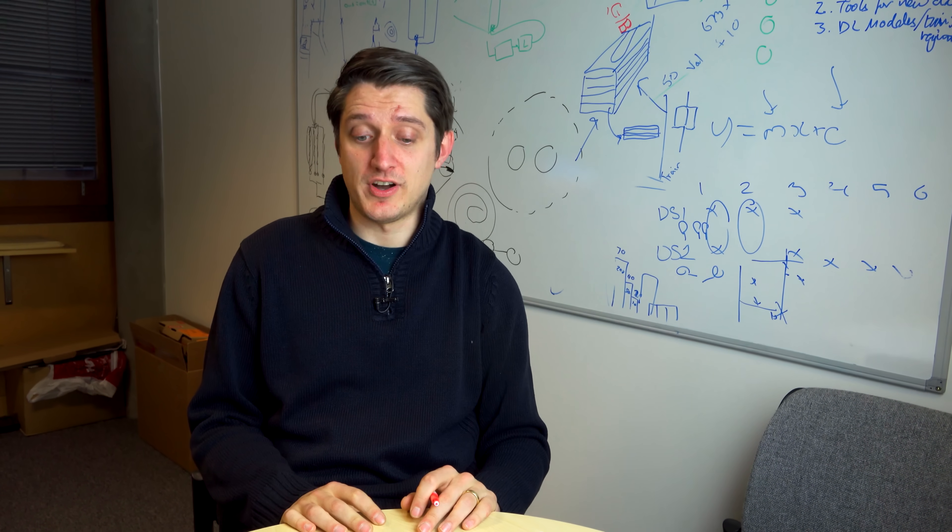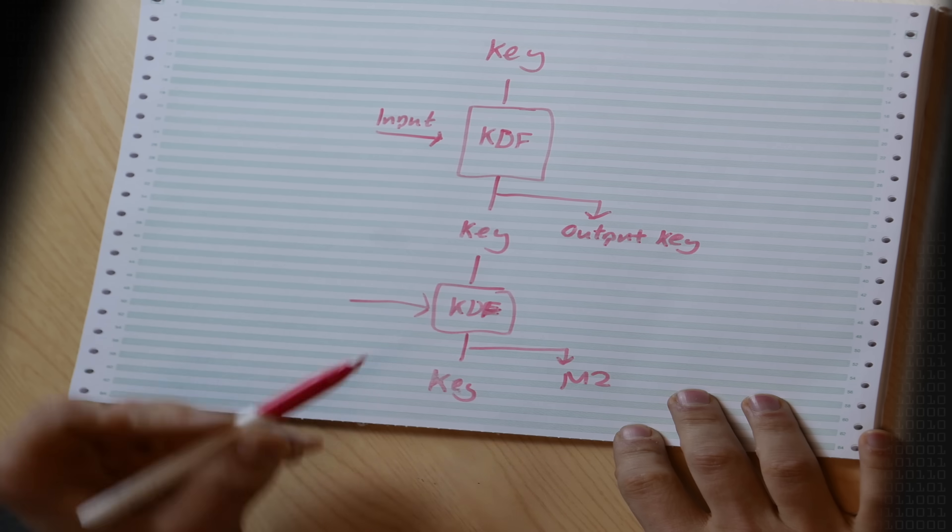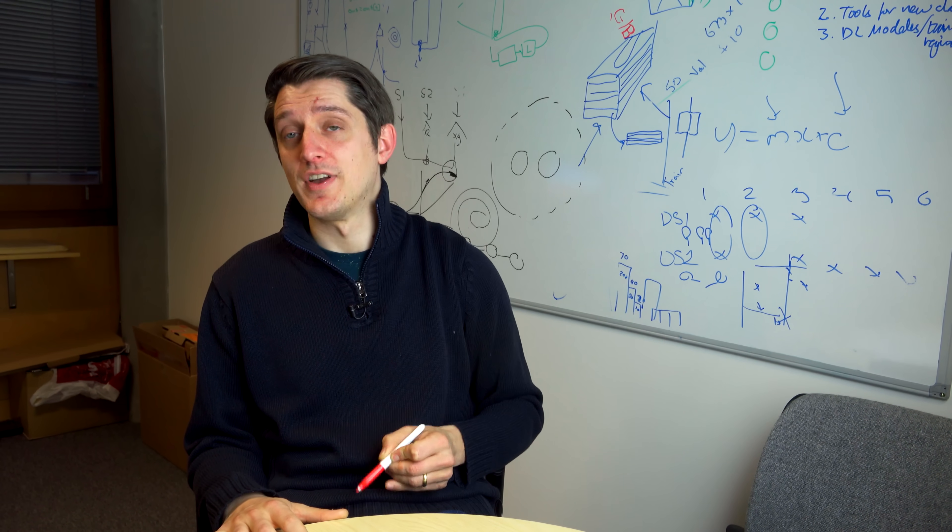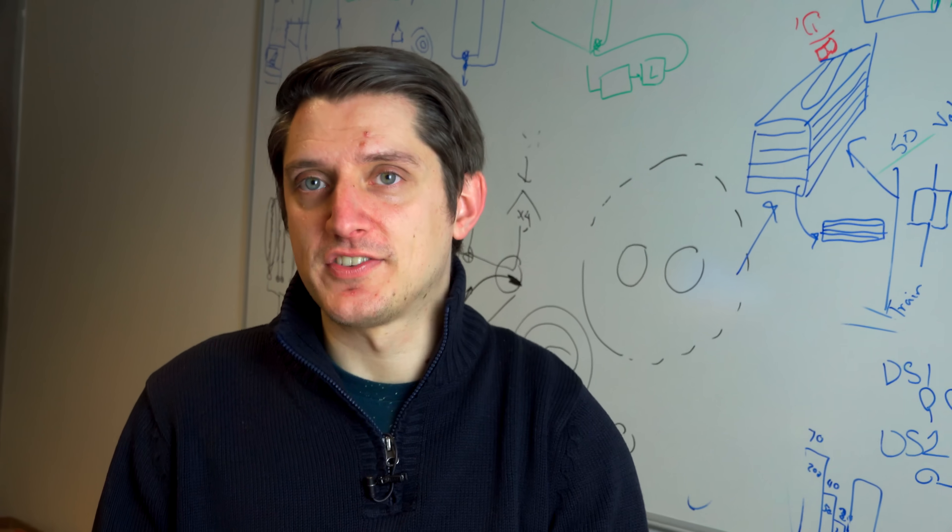What it doesn't do is provide us with future secrecy. If I break this key I can use this KDF to produce the next key and the next key and so on and so forth. That's a huge problem. So how do we fix that?